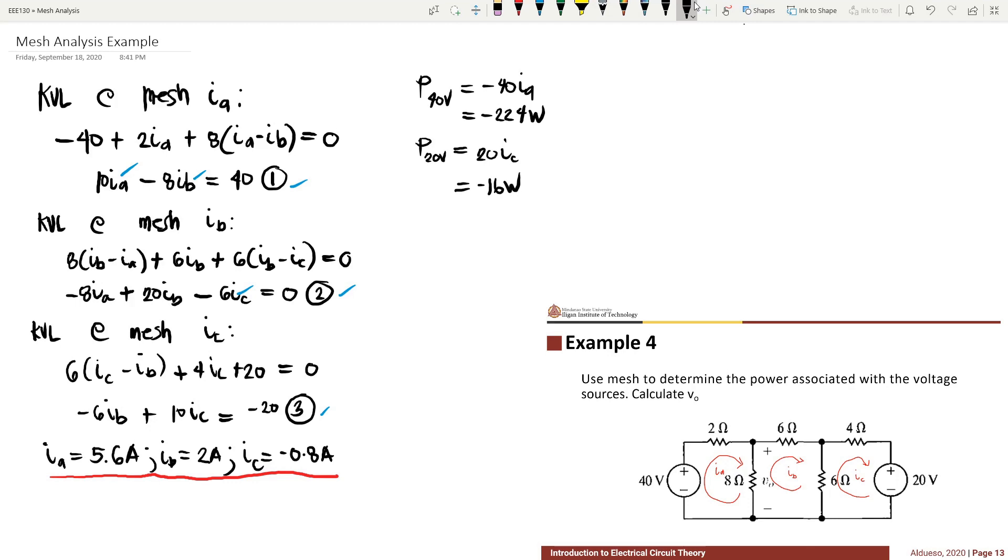And Vo equal to 8 times (Ia minus Ib), which equals 28.8 volts.